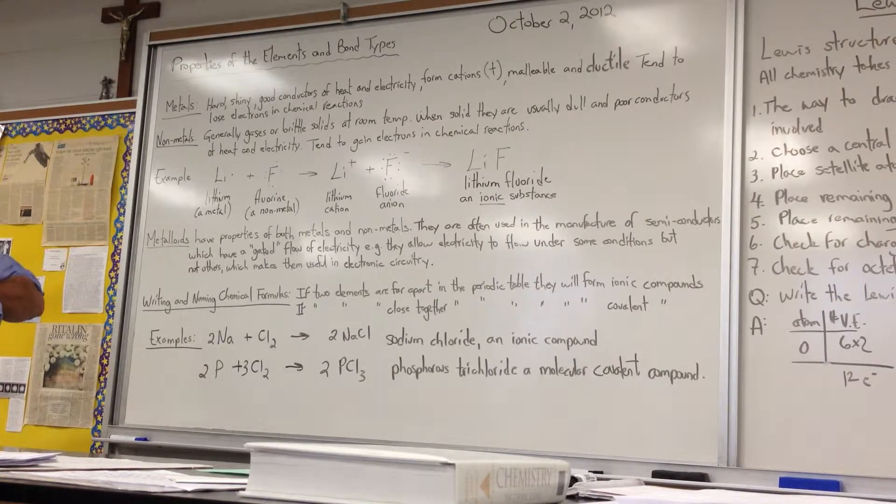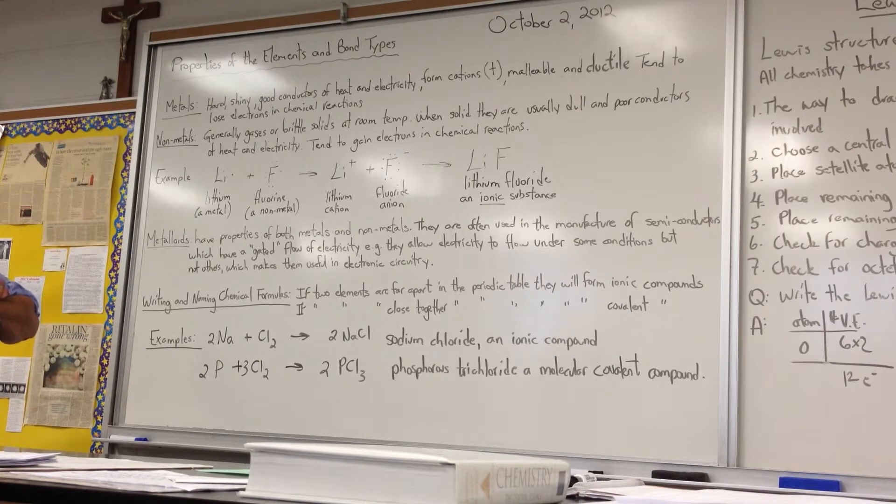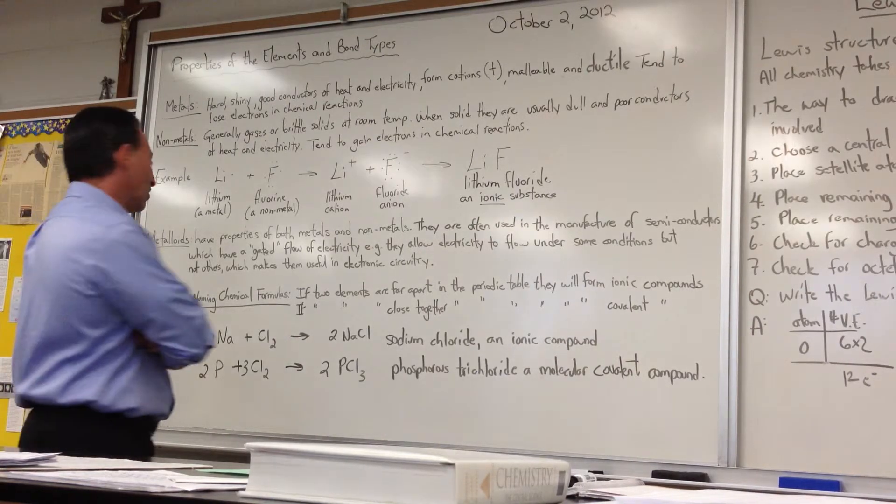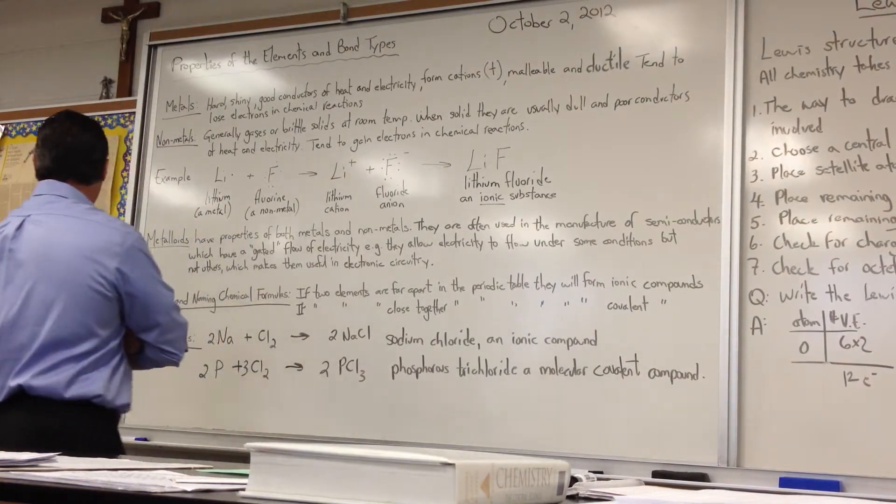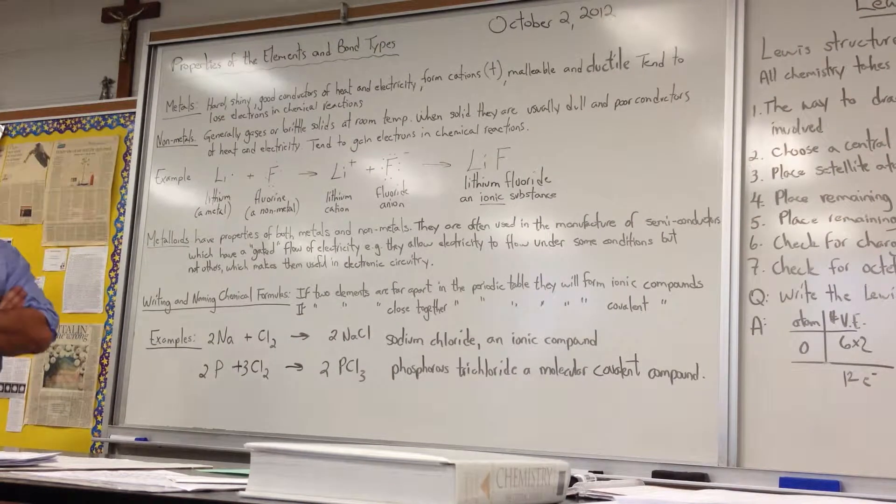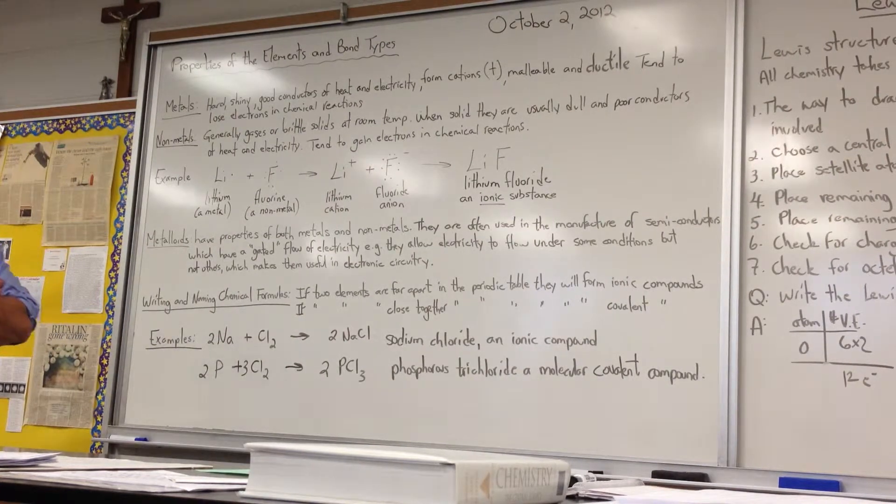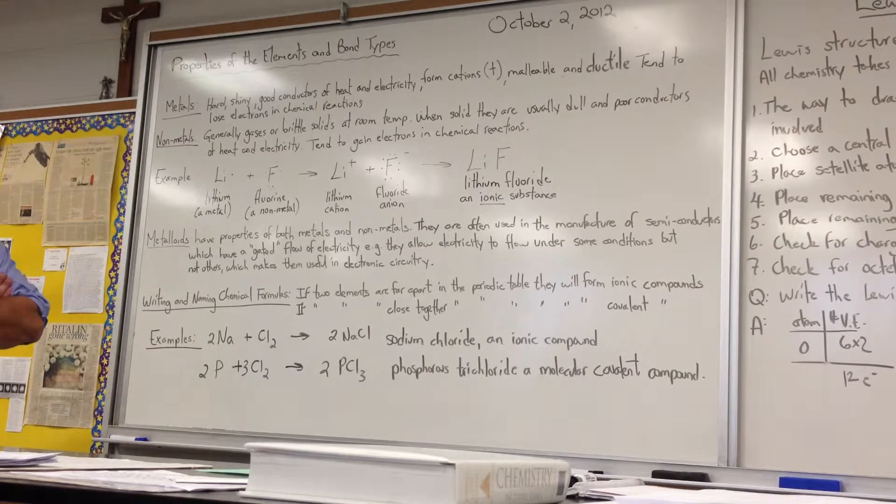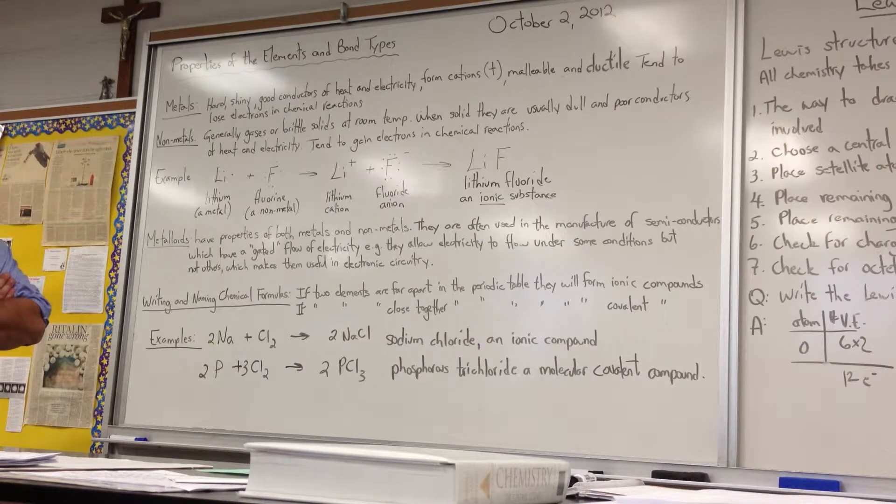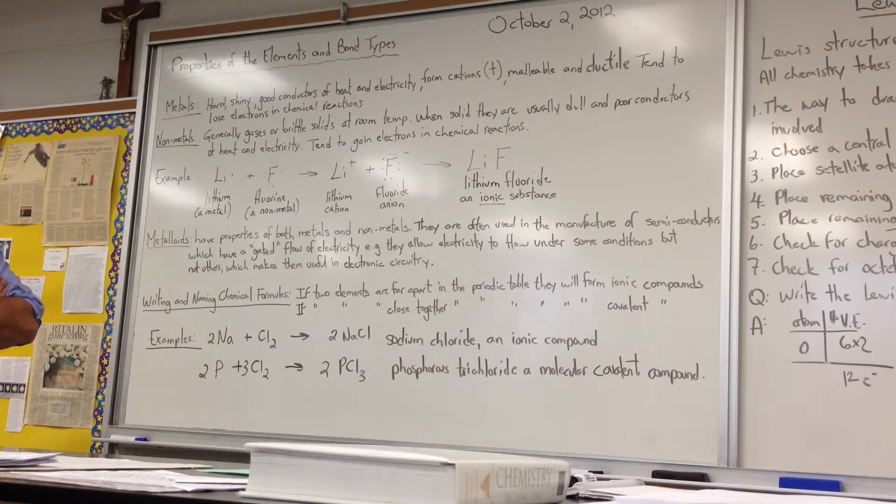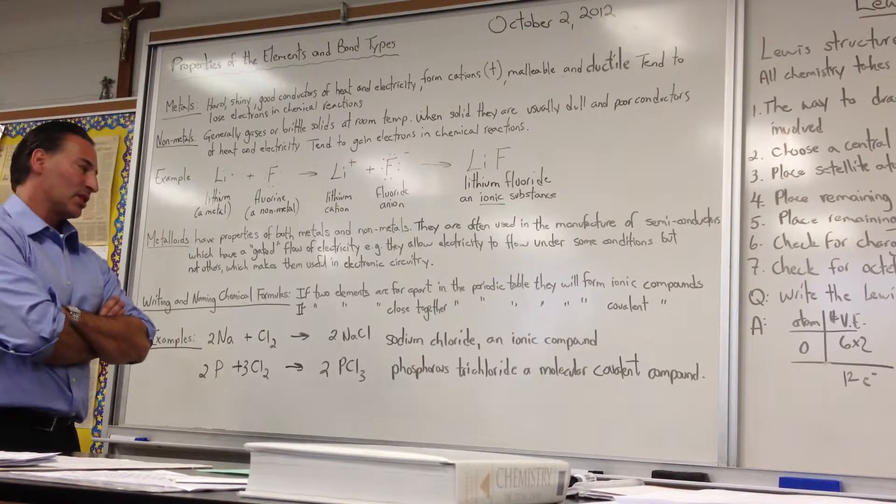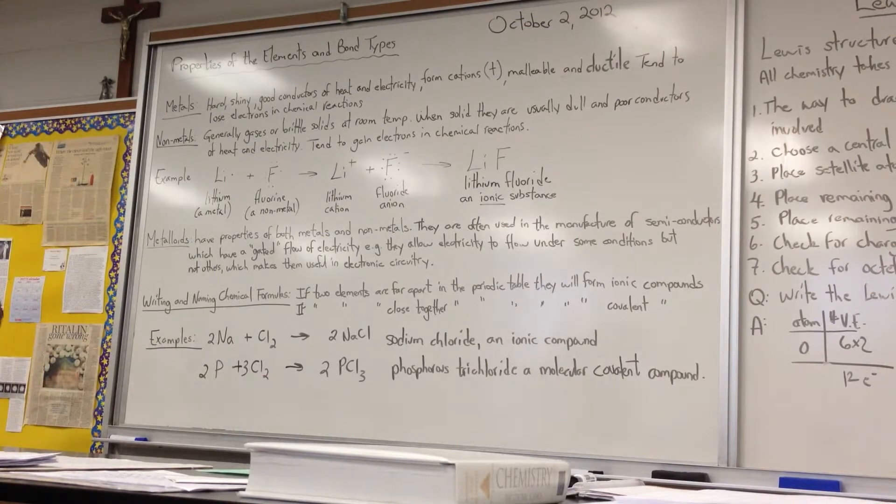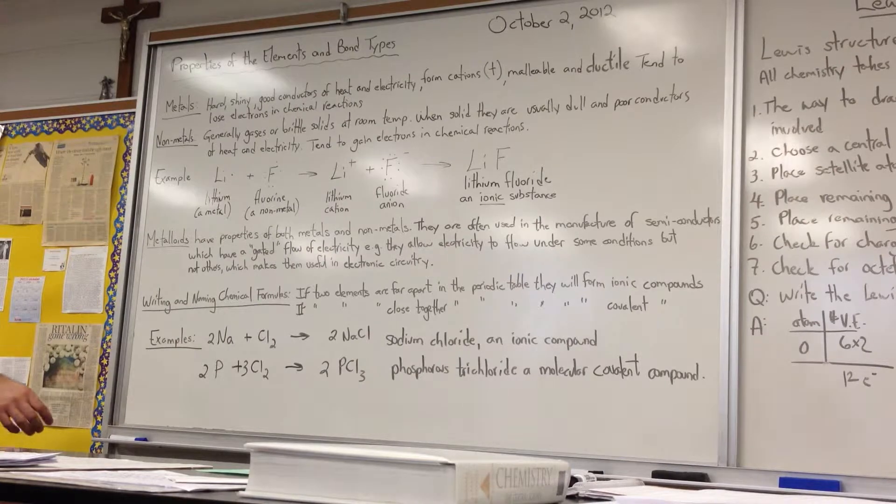Metalloids have properties of both metals and non-metals. They're often used in the manufacture of semiconductors, which have a gated flow of electricity. For example, they allow electricity to flow under some conditions, but not others, which makes them useful in electronic circuitry. The whole basis of electronic circuitry is to control the flow of electricity and to make, very often, just binary decisions, a yes or no circuit. And if you have enough of those circuits connected, you can get a logic circuit.